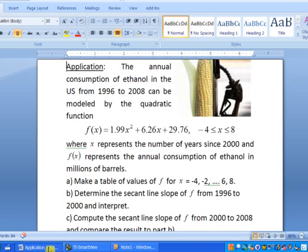So let's take a look at an application. The annual consumption of ethanol in the U.S. from 1996 to 2008 can be modeled by the quadratic function, and there you see it there. Notice our reasonable domain is from negative 4 to 8. x represents the number of years since 2000, and f of x represents the annual consumption of ethanol in millions of barrels.